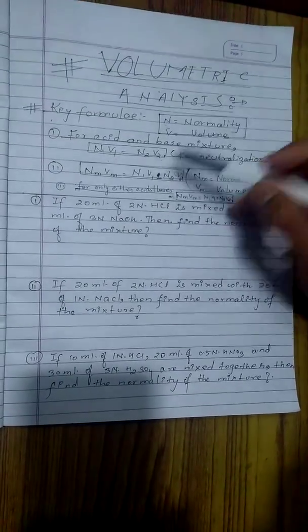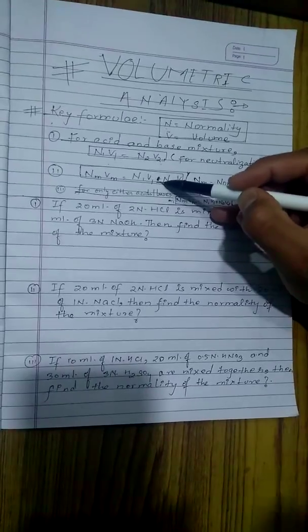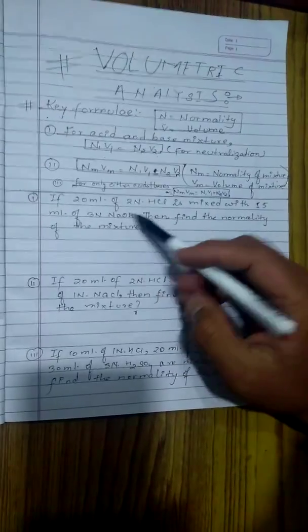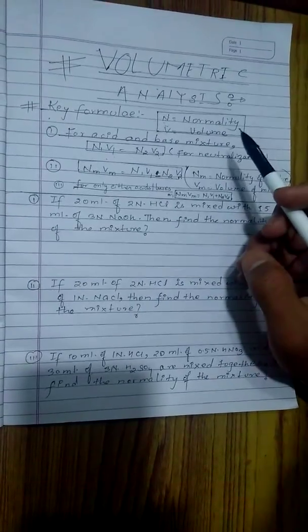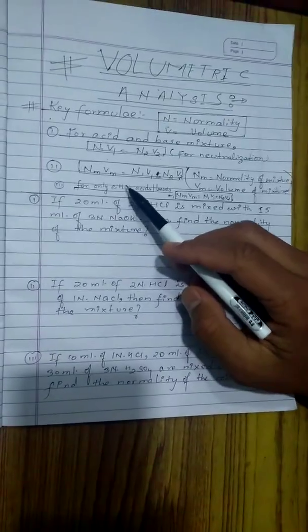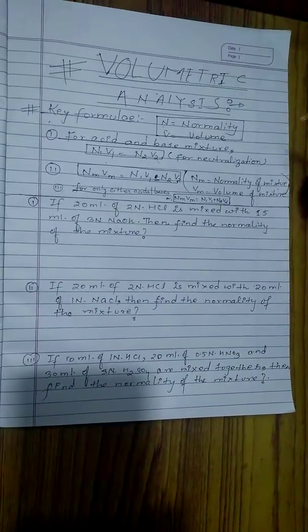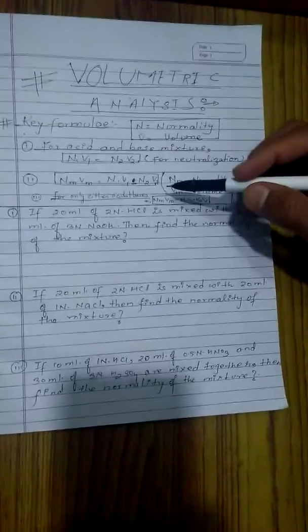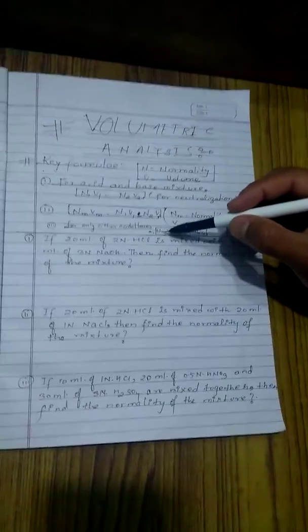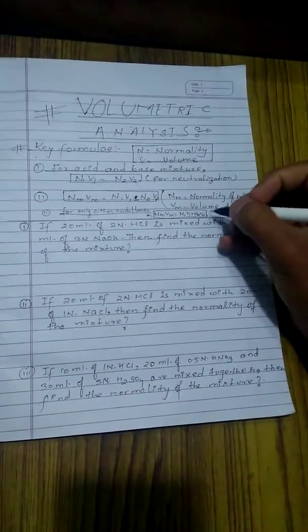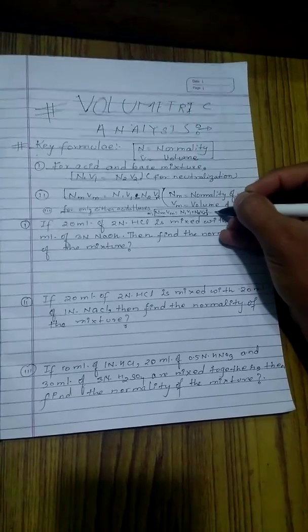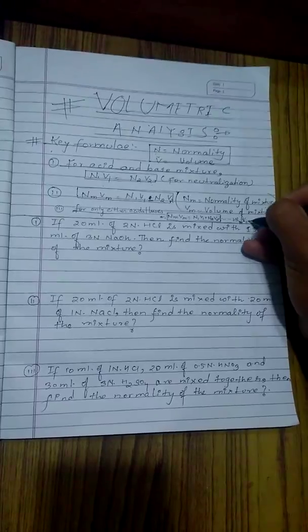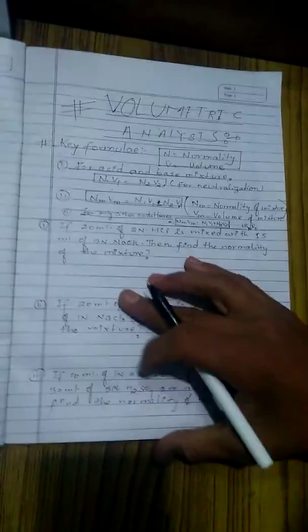And last, last formula for only either the acid or base mixture. Clear? Only for acid or base mixture. Either we mix all kinds of acids or all kinds of bases. At that time we use the formula for the mixture: NmVm equals N1V1 plus N2V2 plus dot dot dot up to NnVn of the nth term.